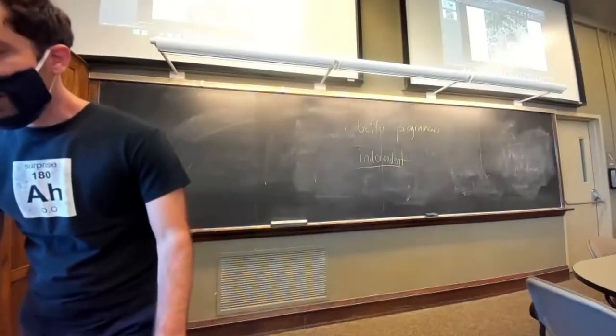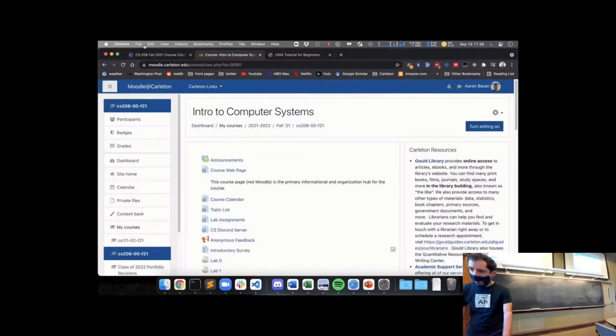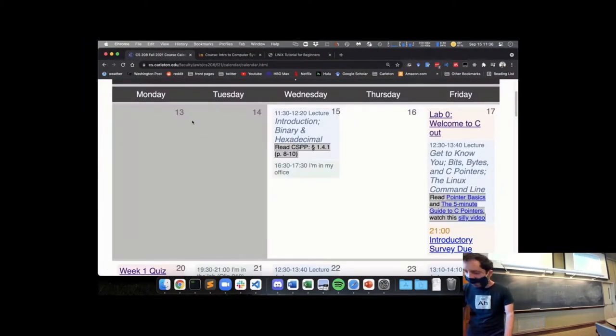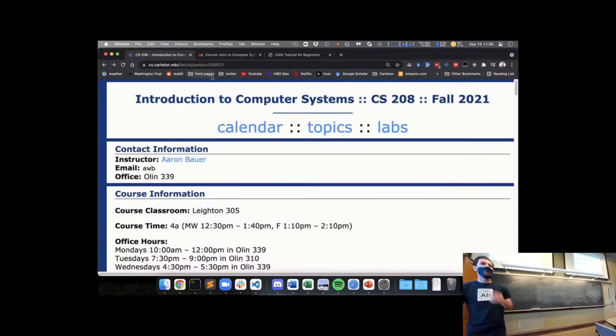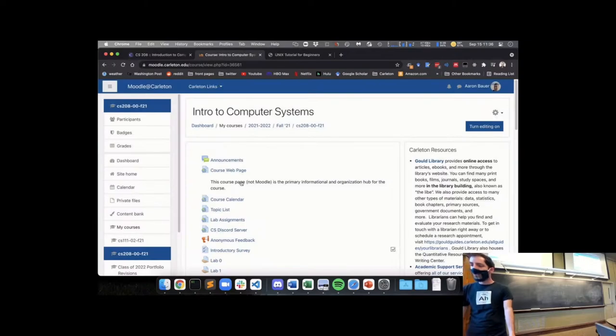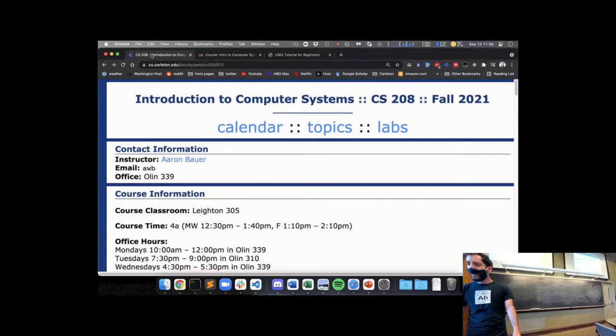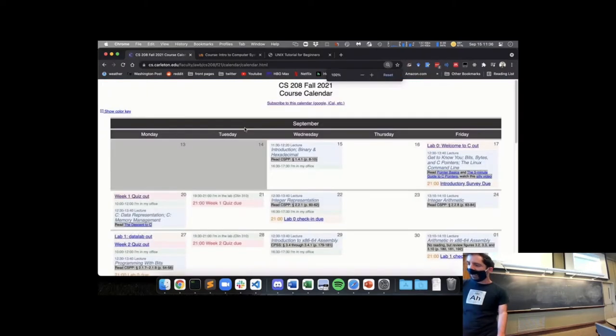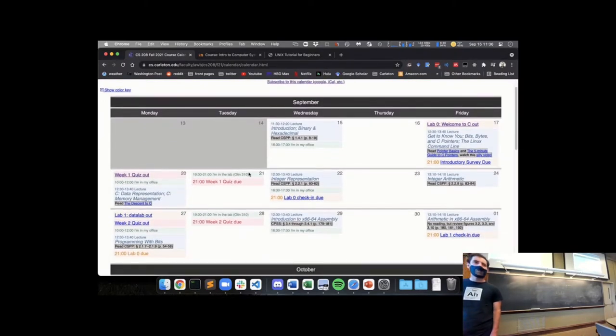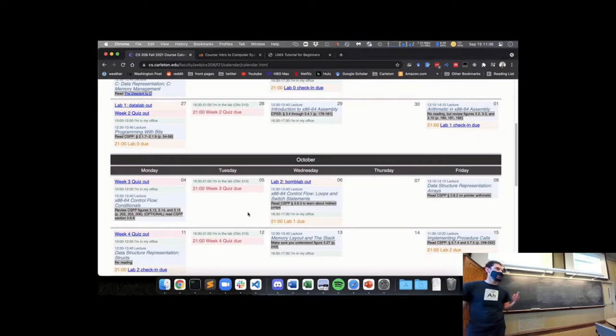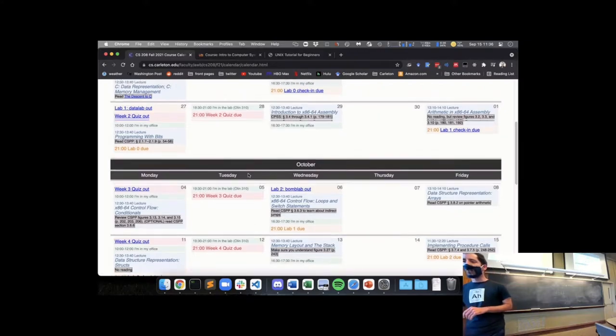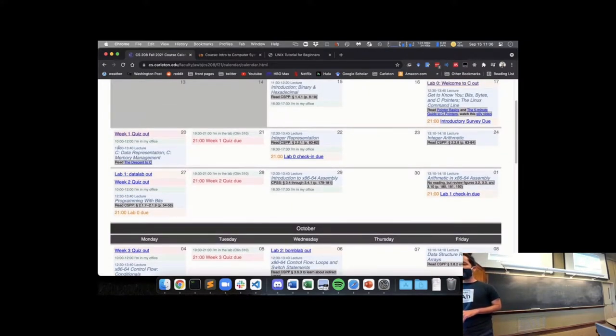So the syllabus is in fact just the course website. And you can get to the course website from the course Moodle course webpage. It's linked there right at the top. And the most useful thing on this course webpage is this calendar. The calendar lays out all the topics for the term, when the quizzes will be due, when the assignments will be due. So you can use this to plan and know when things are going to happen.